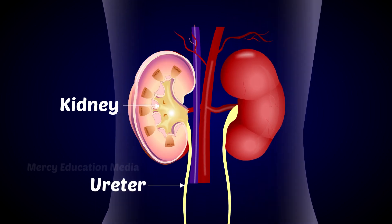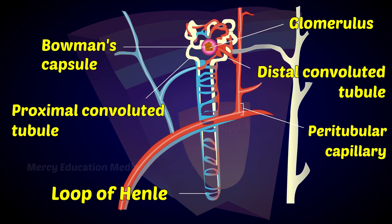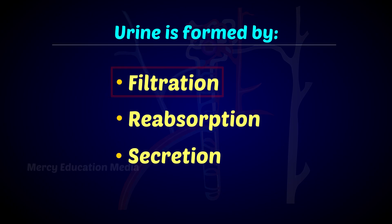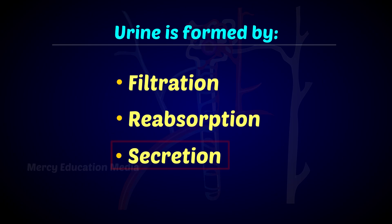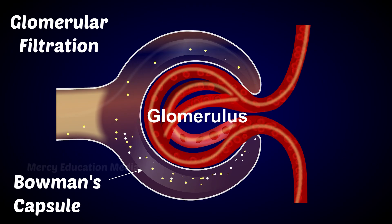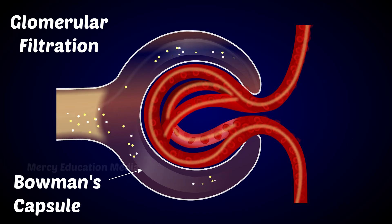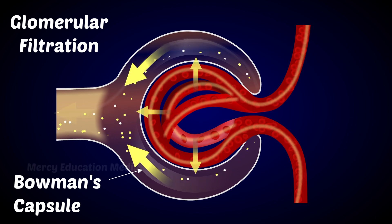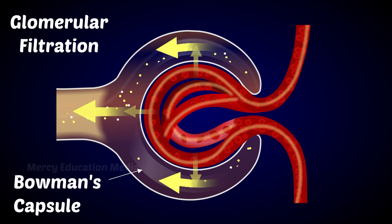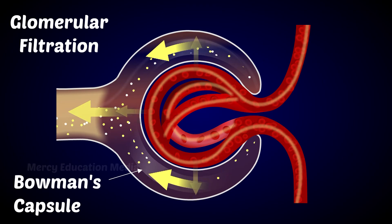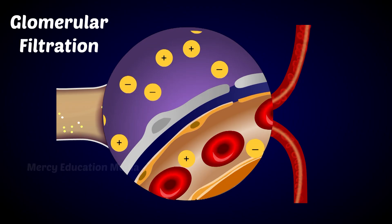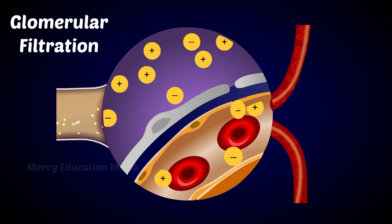In glomerular filtration, the glomerulus filters water and other salt substances from the plasma of the blood. This results in increased blood pressure, which forces plasma-like fluid from the blood into the Bowman's capsule and into the tubules. The filtrate includes many positive and negative ions of many elements.